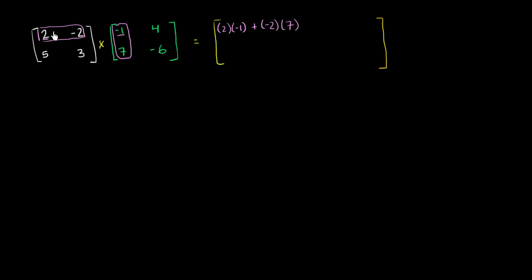So notice, I took the product, first entry in the row, first entry in the column, those two products, then the product of second entry in the row, second entry in the column, that's right over there, and then I added them together. And that's essentially taking the dot product of this row vector and this column vector. If that doesn't make sense to you, if you're not familiar with vectors and dot products, don't worry about it. We just took the product of the first entry, product of the second entry, added them together to get, this is going to give us some number, and we'll calculate that in a few seconds.